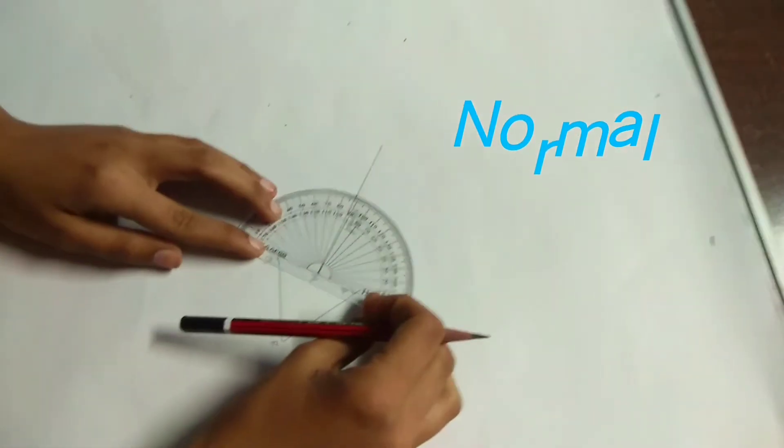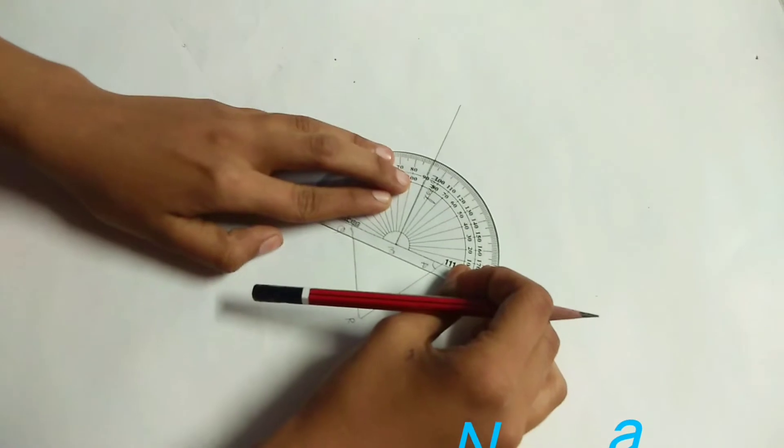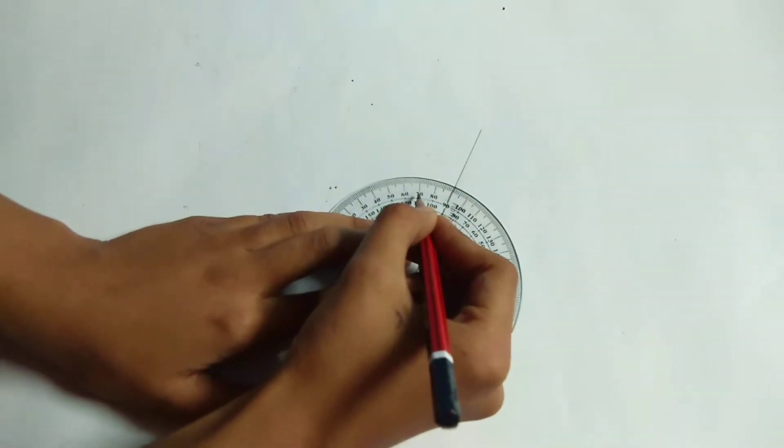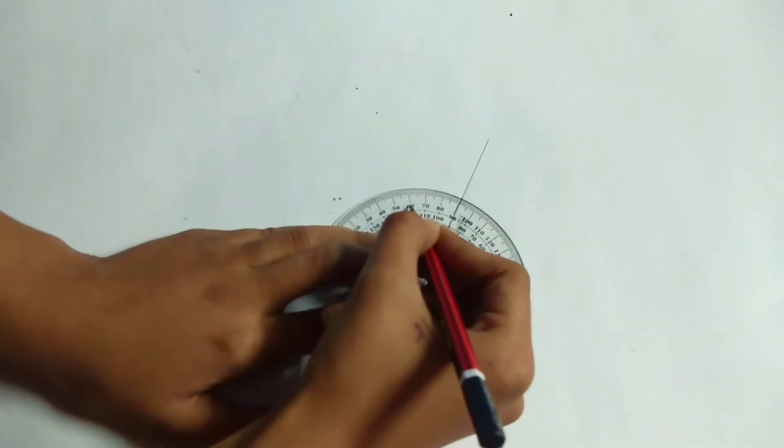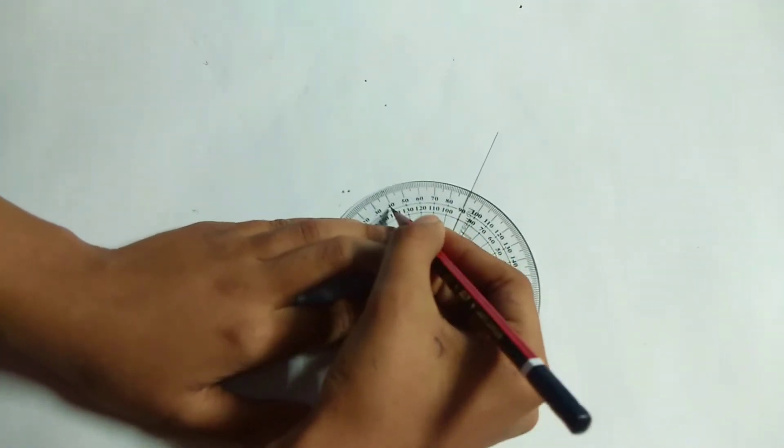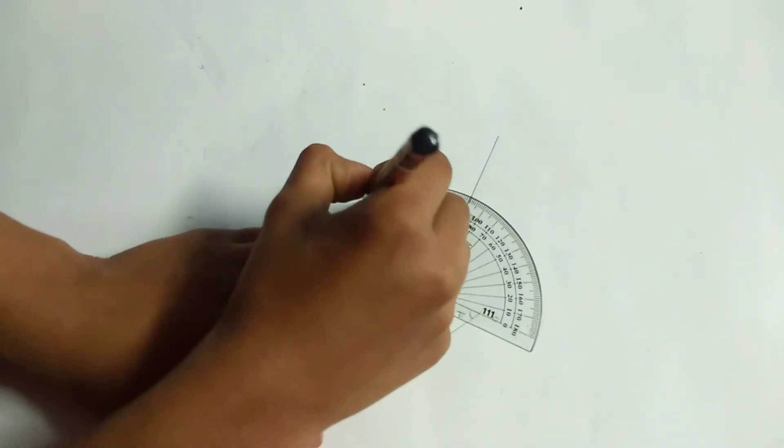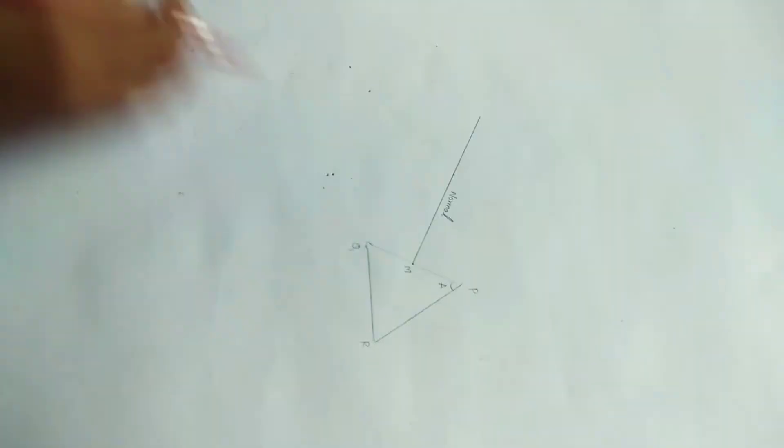Place the protractor along the normal and mark an angle of 60 degrees. Draw a line up to M.